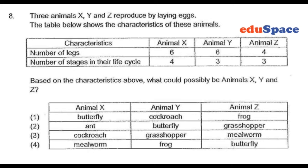In question 8, we're trying to see 3 animals, X, Y and Z, reproduced by laying eggs. It shows the characteristics of these animals, and we can see that animal X has 6 legs and it has 4 stages in its life cycle.